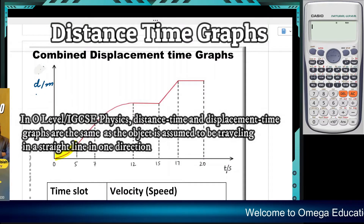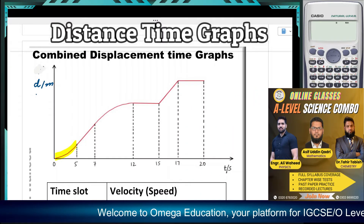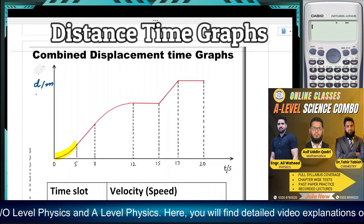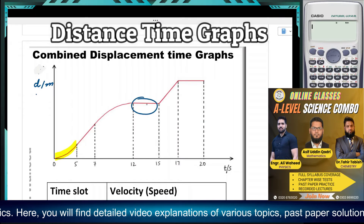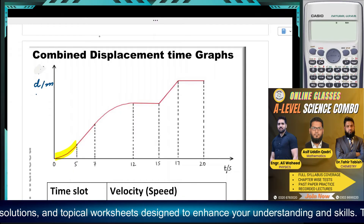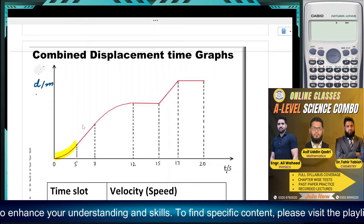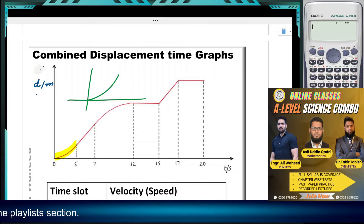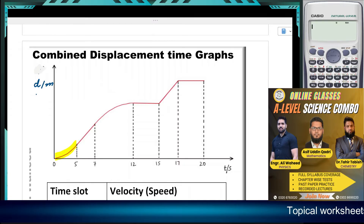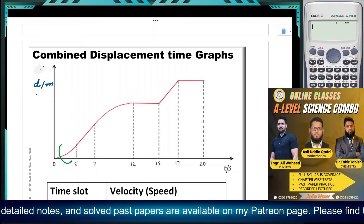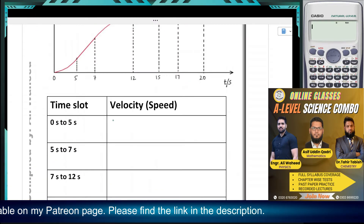We'll have to comment on the speed of the vehicle because the distance is being increased all the time — distance does not decrease at any point in the graph. At worst the distance would remain the same, for example here and over here. So from 0 to 5 seconds, that kind of shape in a distance-time graph represents increasing speed.